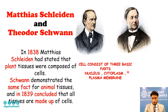In 1839, we can summarize their observations and research: cell consists of three basic parts — nucleus, cytoplasm, and plasma membrane. These are the most important findings of these two scientists — one a botanist and the other a zoologist — who observed the presence of the nucleus, cytoplasm, and plasma membrane.